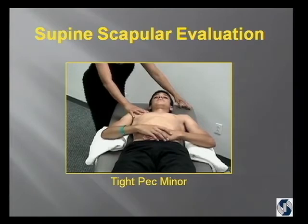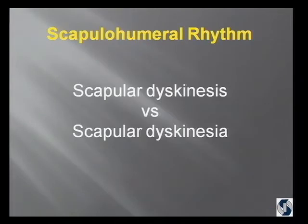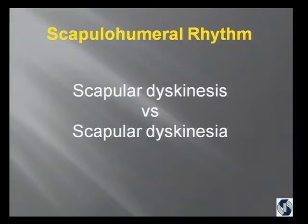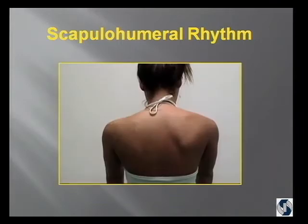The pec minor in pitchers will sometimes be shortened, and that's a very significant problem. Let's talk for a moment about scapular dyskinesis versus dyskinesia, because even at this meeting I've heard the term dyskinesia being used. What we look at is scapular dyskinesis. Dyskinesia is the kind of involuntary movement you would have with Parkinson's — that's dyskinesia. The correct term here is dyskinesis.